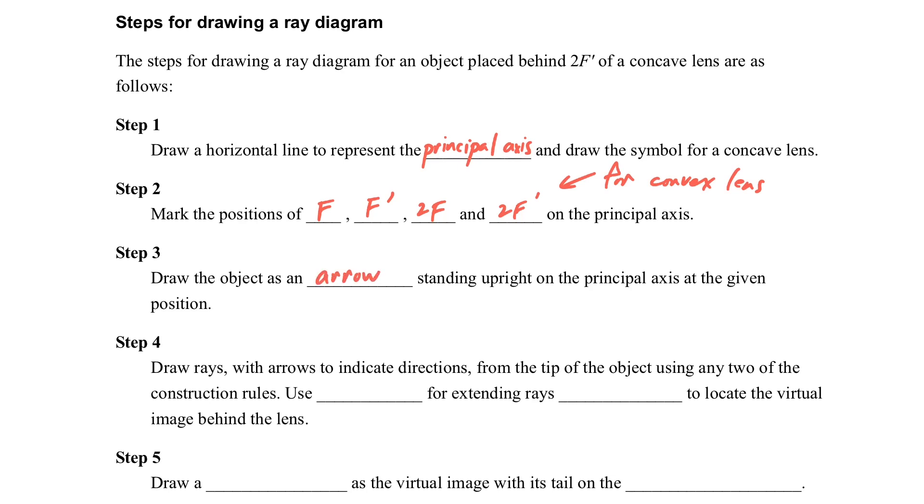And then step three, we will draw the object. Usually we use an arrow to represent it. And then we will draw the light ray by using the two roots. And we have to extend the light ray backward with the dotted line in order to find the intersection point. And we will use the dotted arrow to represent the image because it is a virtual image.